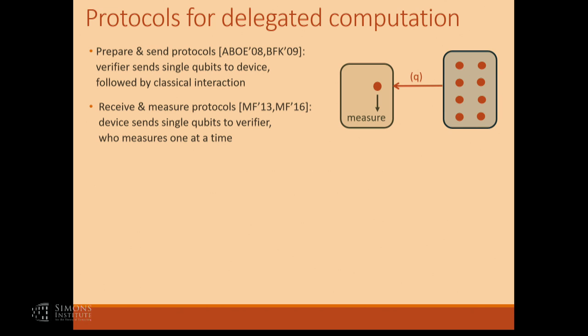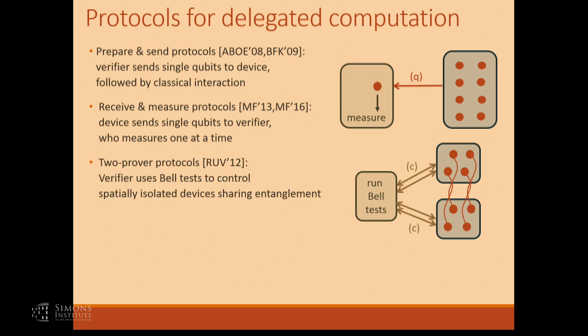These two types of protocols involve a little bit of quantum ability for the verifier. For a fairly long time it was a big open question whether you could design protocols that have only classical communication. The first type of such protocol is due to Reichardt, Unger, and Vazirani, 2012. They showed that if you assume access to two quantum servers in isolated locations that share quantum entanglement, then you can have protocols for delegated computation that are information-theoretically sound and only require classical information exchange. The drawback is you need these two servers in isolated locations.